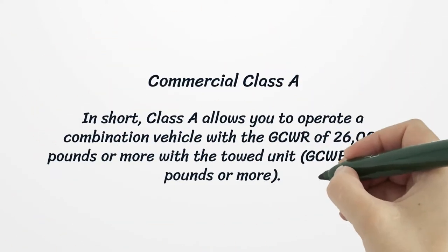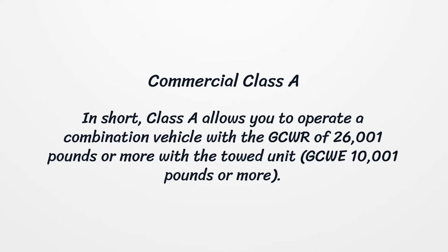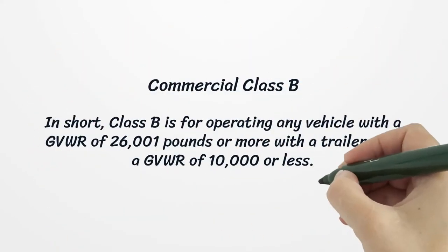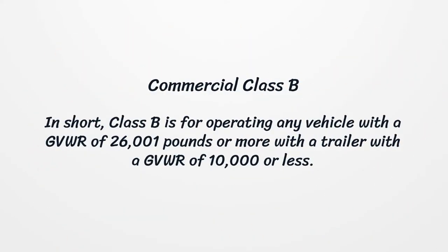Commercial Class A: Class A allows you to operate a combination vehicle with a GCWR of 26,001 pounds or more, with a towed unit GCWR of 10,001 pounds or more. Commercial Class B: Class B is for operating any vehicle with a GVWR of 26,001 pounds or more, with a trailer with a GVWR of 10,000 pounds or less.